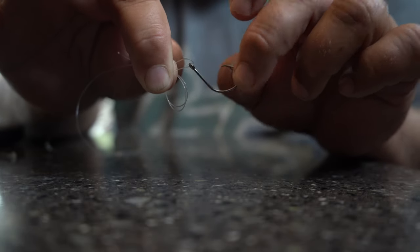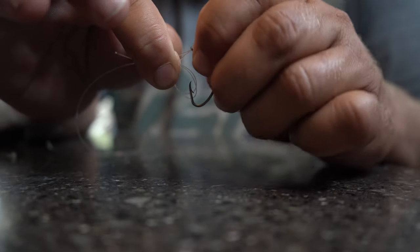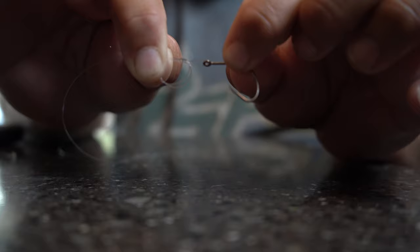So now you're gonna have the hook in a loop, and then a loop. And then what you want to do, and this is the whole knot right here, is just run the hook through the loop like so.